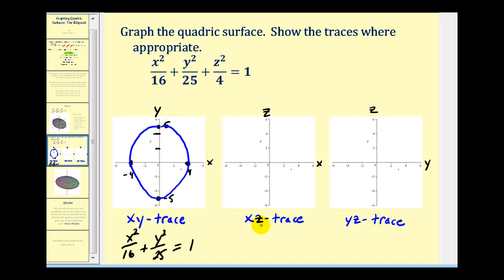Next to determine the xz trace, we'll set y, the missing variable, equal to zero. So that will give us x squared over 16 plus z squared over four equals one. So now we're going to call this the x-axis, this the z-axis, and we have another ellipse.